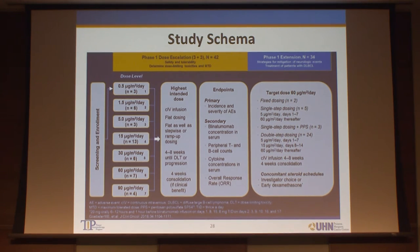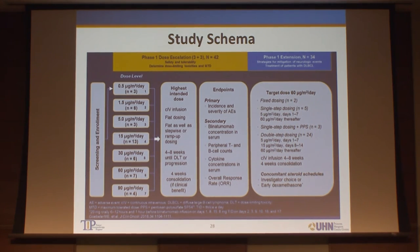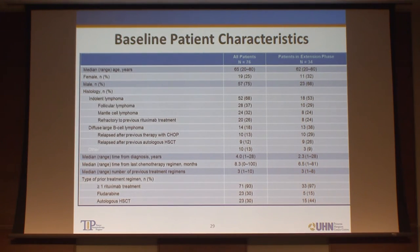They looked at a flat dose, and also stepwise ramping up dosing, because in lymphoma there was more opportunity to understand how to target the drug given that lymphoma physicians, much like solid tumor physicians, were less willing to accept the challenges seen with this drug in ALL — there are many other active therapies available. Making this user-friendly was clearly the goal. The study included over 70 patients with a variety of histologies — follicular, mantle cell, and diffuse large B-cell lymphoma — multiple prior lines of therapy, about a third with prior autologous transplants, and essentially all had received at least one course of rituximab-based therapy.